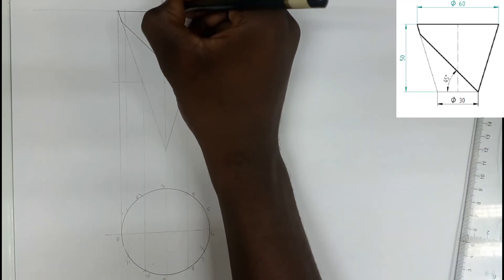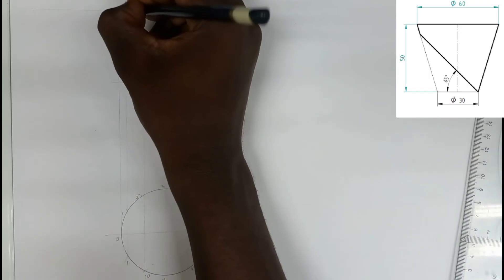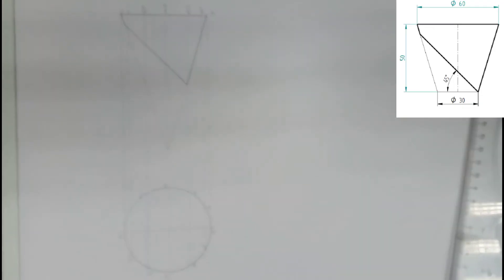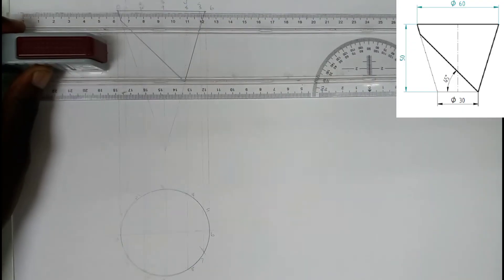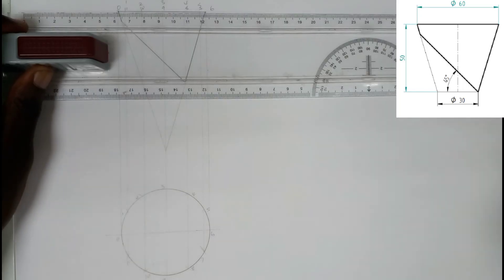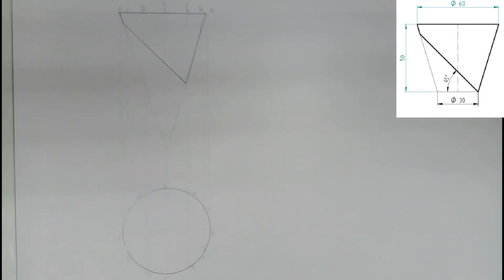Points 3, 9, 2, 10, 1, 11, and 0. Then I'm going to draw the surface here, so I'm going to extend this line. Take your compass.